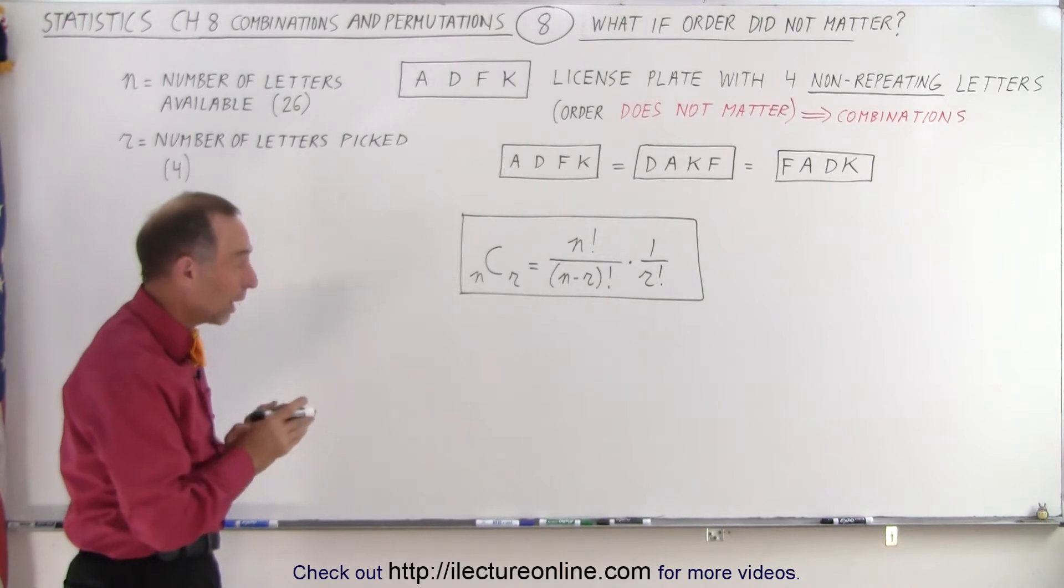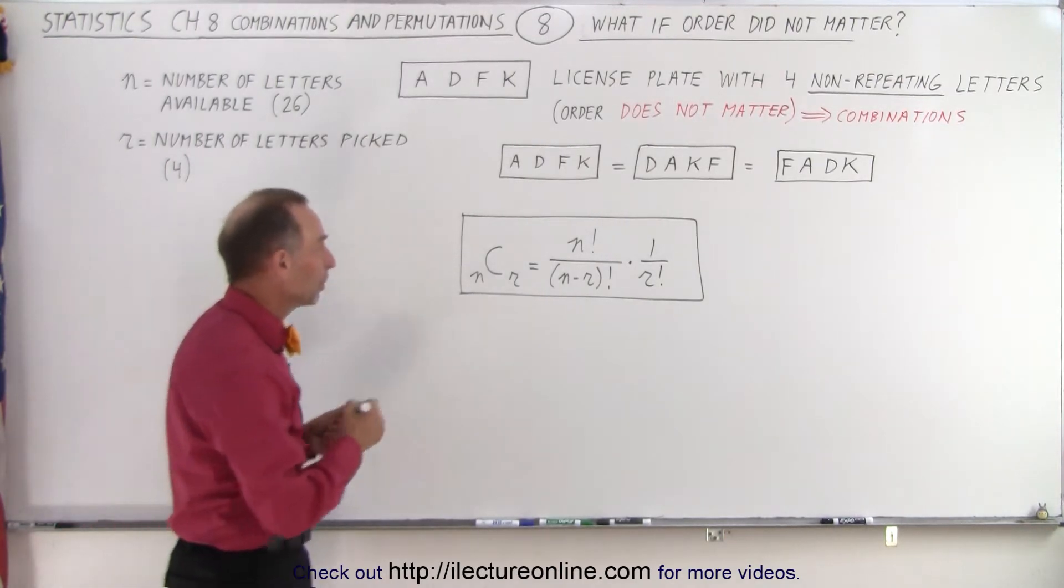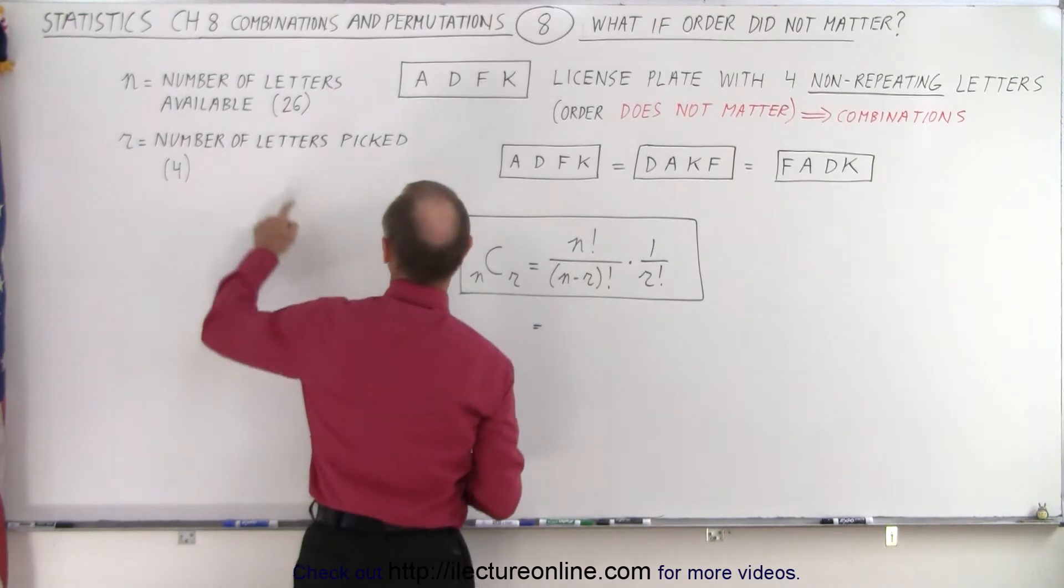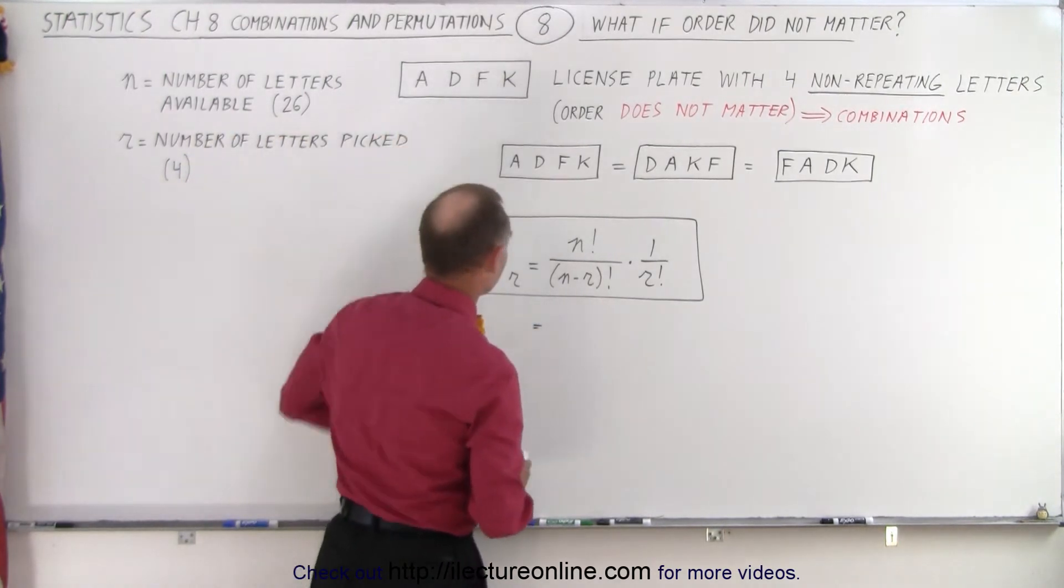Now we're looking for the number of combinations. So let's go ahead and plug in what we have. Notice there's 26 letters in the alphabet and we're picking four letters for a four-character license plate.